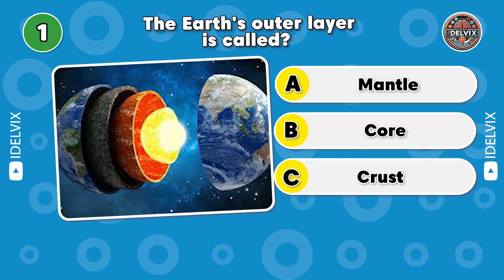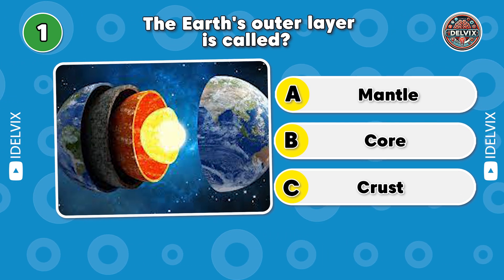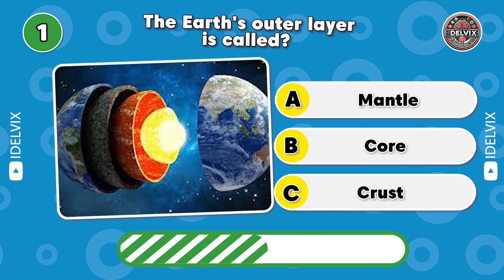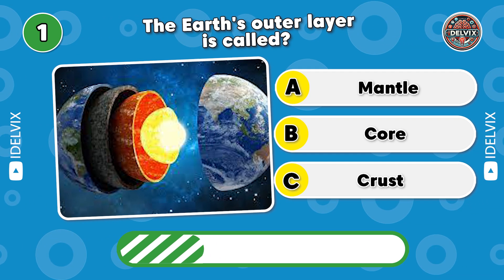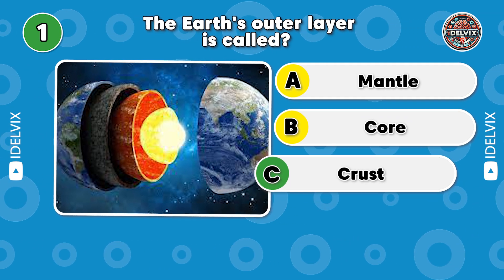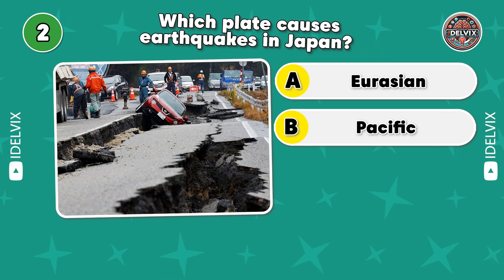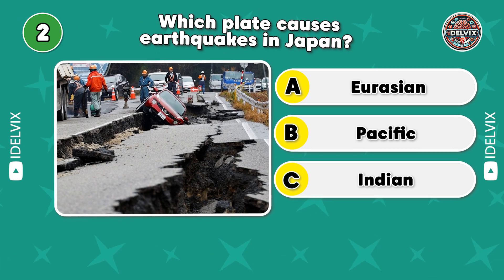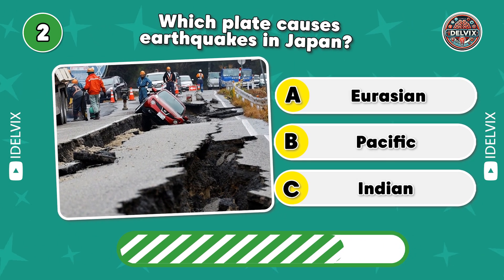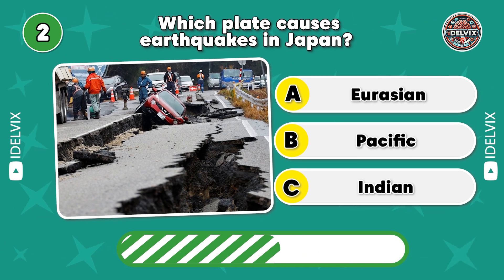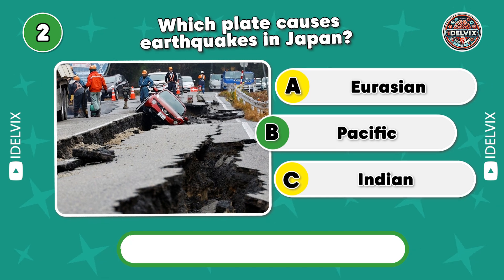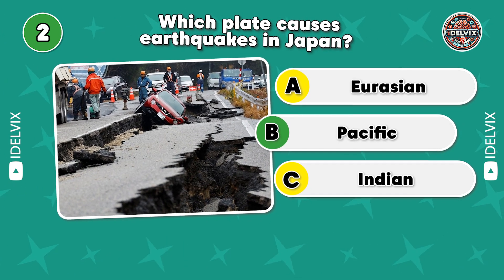1. The Earth's outer layer is called... Answer: Crust. 2. Which plate causes earthquakes in Japan? Answer: Pacific.